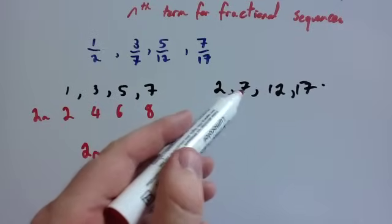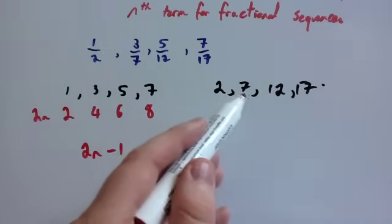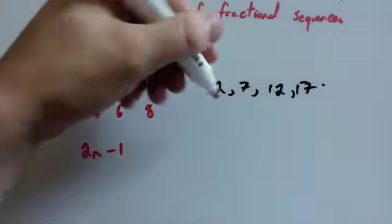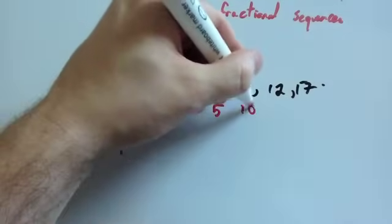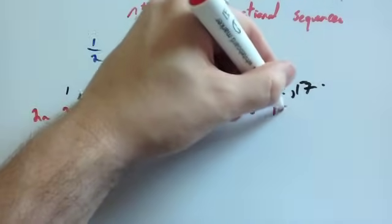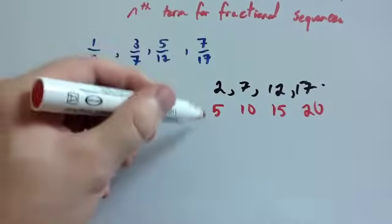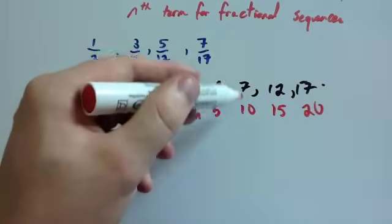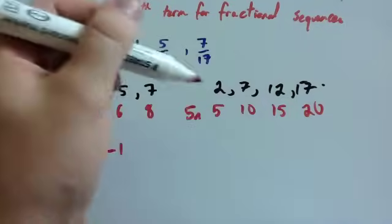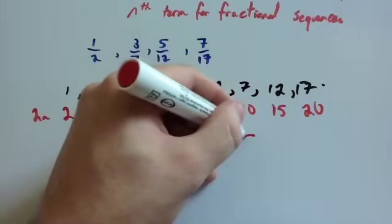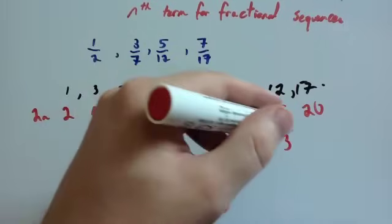Now let's look at the denominators. The denominators went two, seven, twelve, seventeen. It's getting bigger by five each time, so you write the multiples of five beneath the sequence. To get from five to two, ten to seven, fifteen to twelve, and twenty to seventeen, you subtract three. So the nth term for the denominators is five n subtract three.